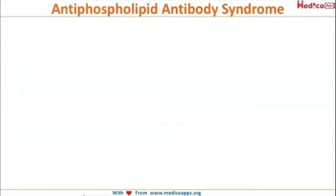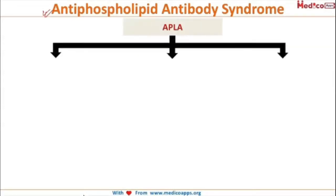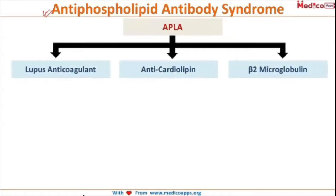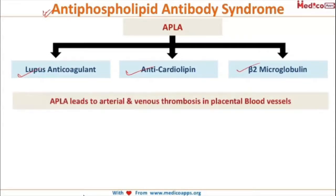Antiphospholipid Antibody Syndrome requires 3 antibody levels for diagnosis: lupus anticoagulant, anticardiolipin antigen, and beta-2 microglobulin. The basic pathology in antiphospholipid antibody syndrome is that it leads to arterial and venous thrombosis in all blood vessels.